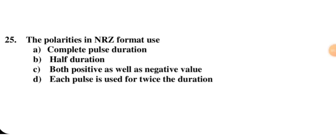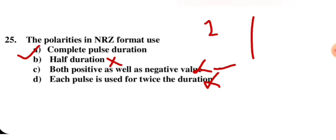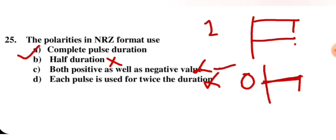The polarities in NRZ format: it uses the complete pulse duration — this is correct. Half duration is used in RZ format. Both positive and negative values within one symbol is for Manchester. Each pulse used for twice the duration is wrong. NRZ means not return to zero — if it is 1, it stays 1 for the full duration; if it is 0, it stays 0. So A is the correct answer.